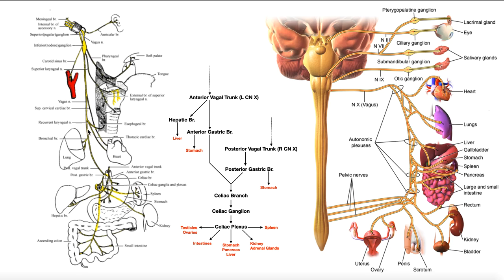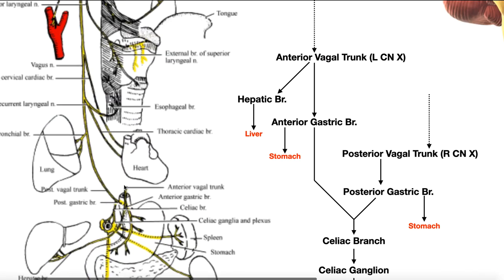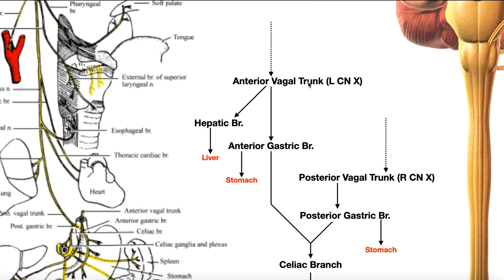At the end of the last video, we talked about how as the vagus nerve descends, it eventually changes names to a vagal trunk. This one is the posterior vagal trunk, and this one here is the anterior vagal trunk. The anterior vagal trunk is actually mostly the left vagus nerve of cranial nerve 10, but because of the intermingling of the two vagus nerves in the esophageal plexus, it has some right contribution. The posterior vagal trunk is mostly the right vagus nerve, although it does have some left contribution. So: posterior is mostly right, anterior is mostly left, but both have contributions from the contralateral vagus nerve.